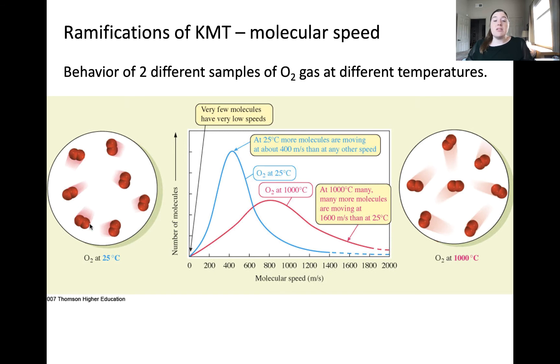The blue curve corresponds to a sample of oxygen gas at 25 degrees Celsius. The pink curve corresponds to a sample of oxygen gas at 1,000 degrees Celsius. One key feature of the curves on this plot is that they indicate molecular speed of a gas sample is represented by a distribution.